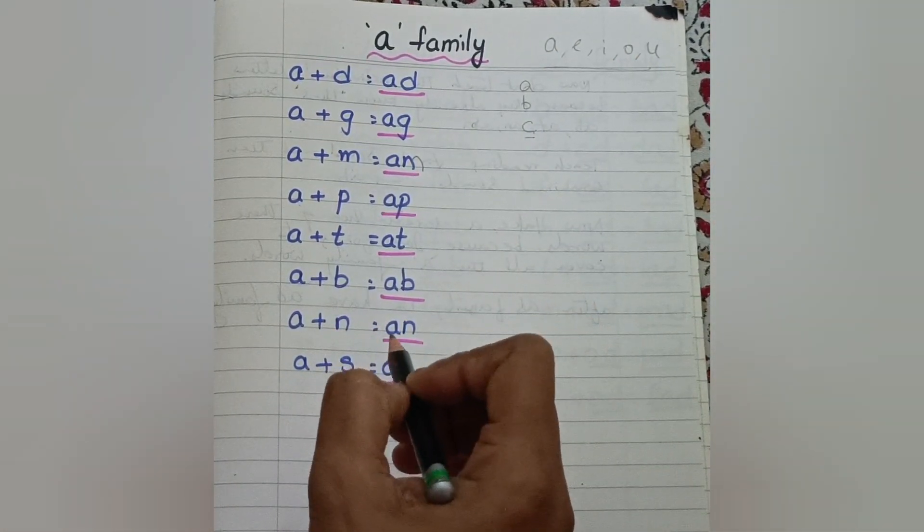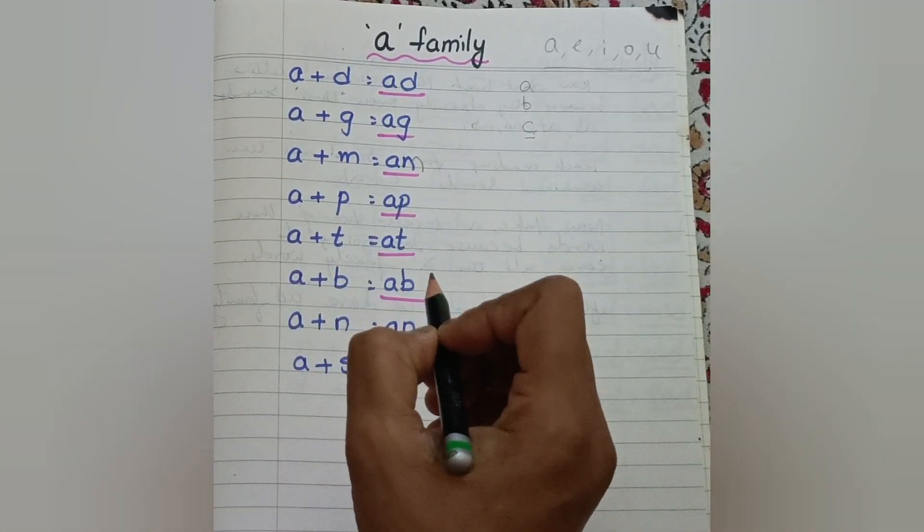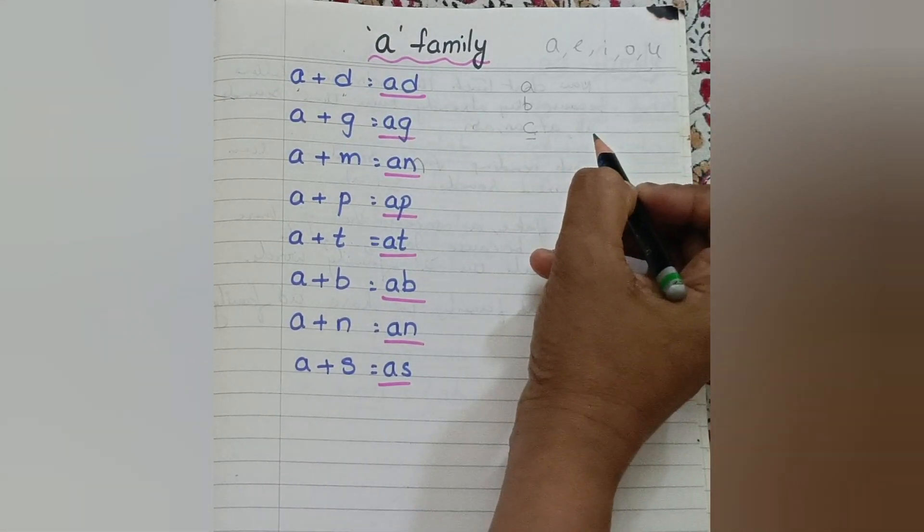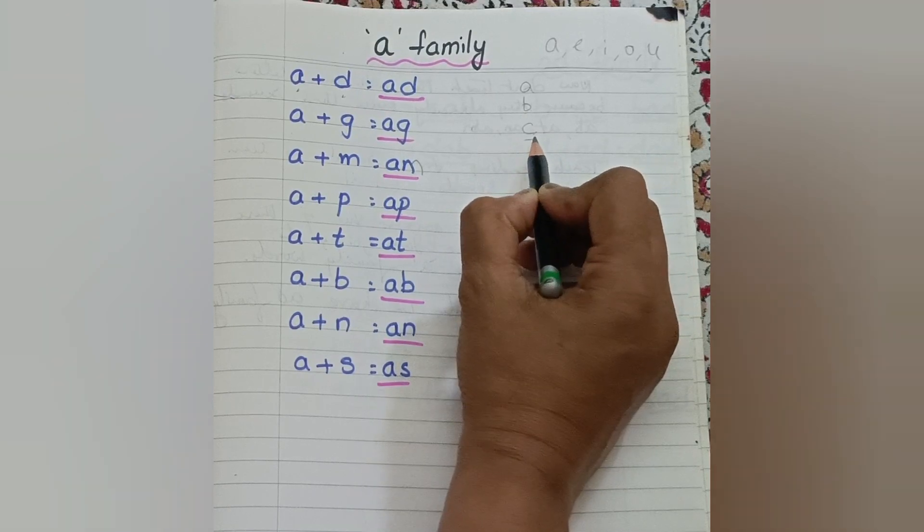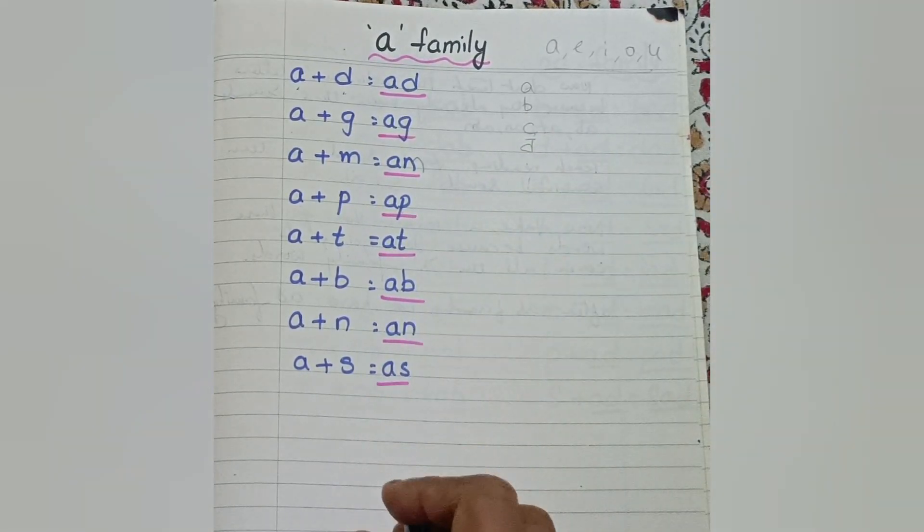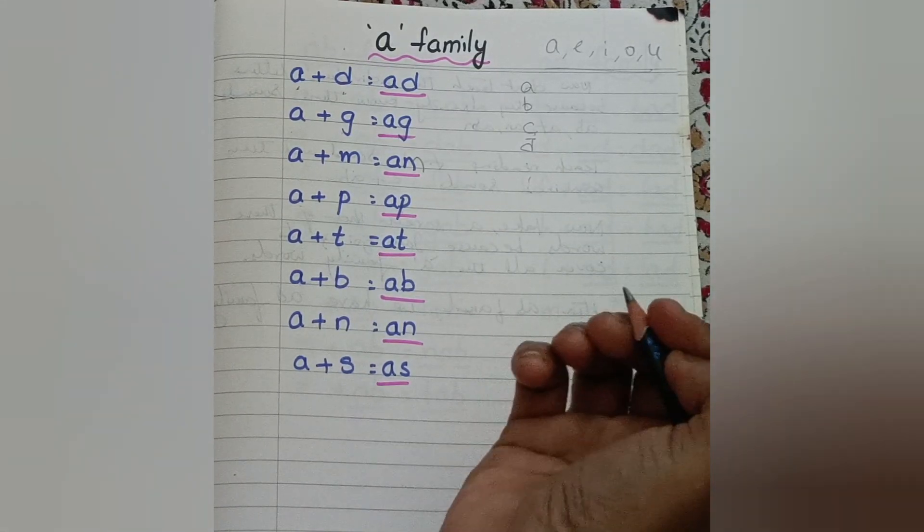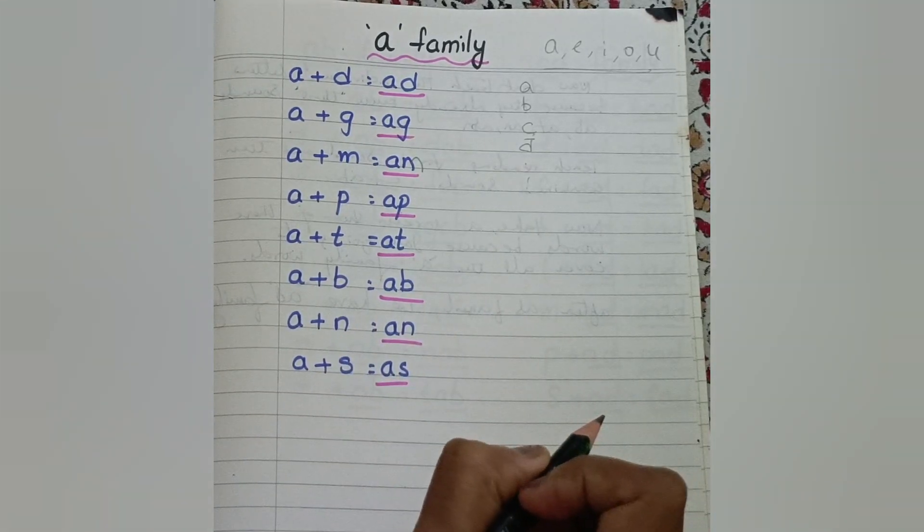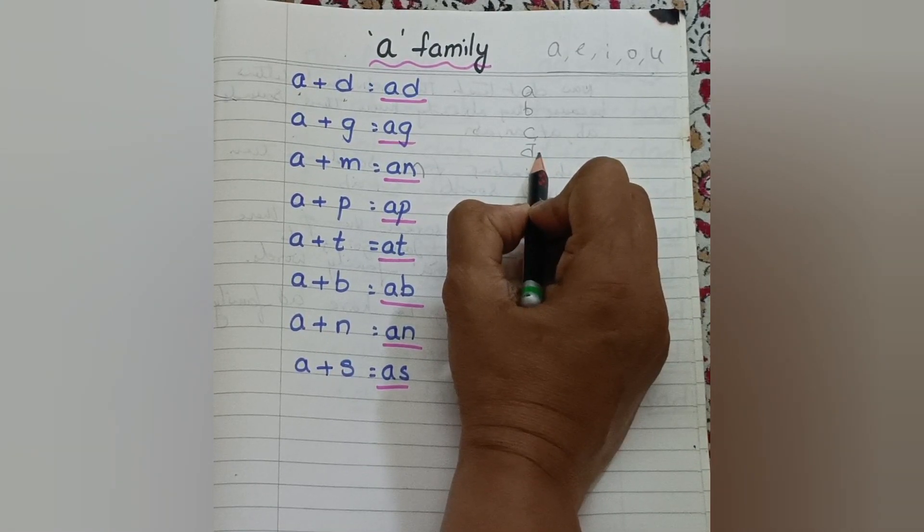First step: teach letter sounds before teaching blending. First we have to teach the letter sounds like A, A, B, B, C, K, D, D, and so on. If the child is familiar with the phonic sounds, then you can teach two-letter words and three-letter words. So this is the first step - we need to teach letter sounds.